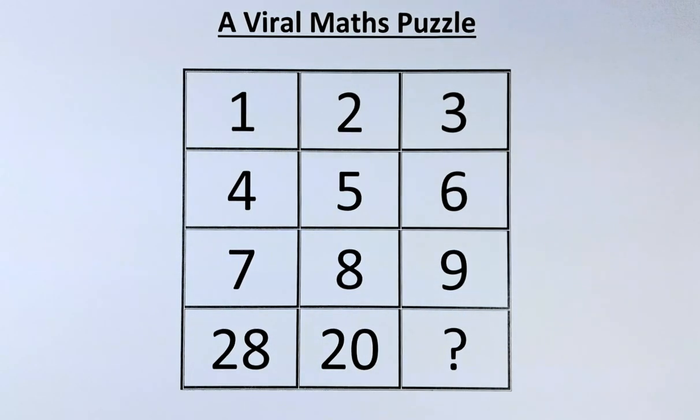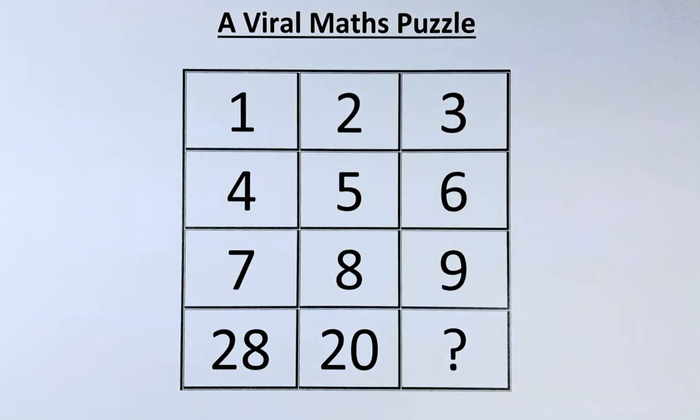In the first row, we have the numbers 1, 2, 3. Second row, we have 4, 5 and 6. In the third row, we have 7, 8 and 9. And in the last row, we have 28, 20 and the question mark.